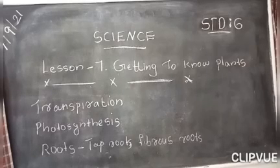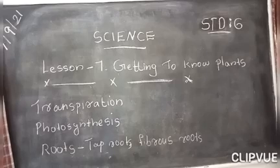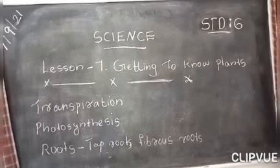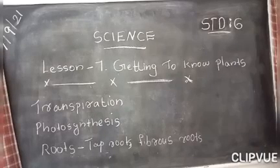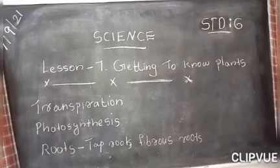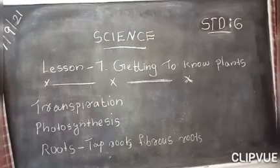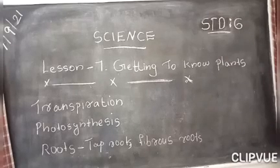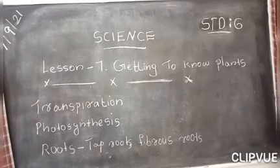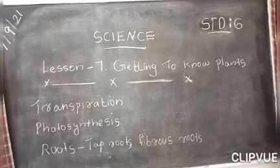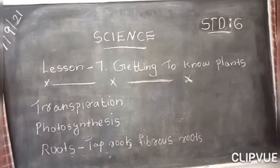Water comes out of leaves in the form of vapor by a process called transpiration. Plants release a lot of water into the air through this process.